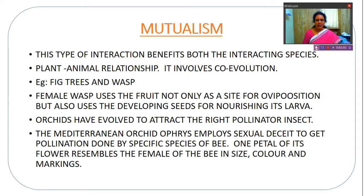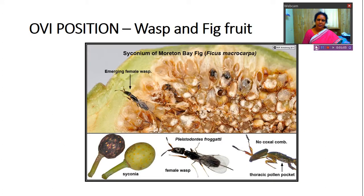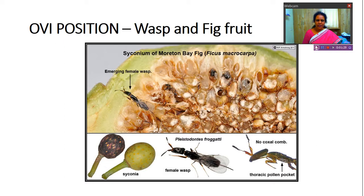The first example is the fig tree, where the fruits of figs are used by wasps for oviposition — that means to lay their eggs. The wasp lays eggs in the fig fruit, so the fig fruit gives shelter and also food to the developing larvae. And what is the benefit the wasp gives to the fig tree? It helps in pollination. So the plant is helped by the wasp for pollination, and the wasp gets benefit as shelter and food for its developing larvae.